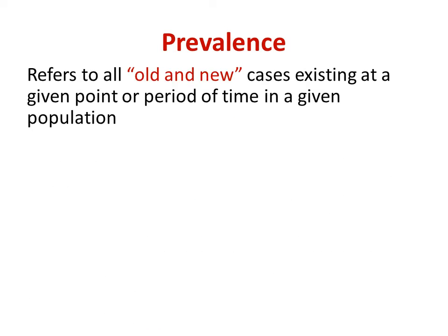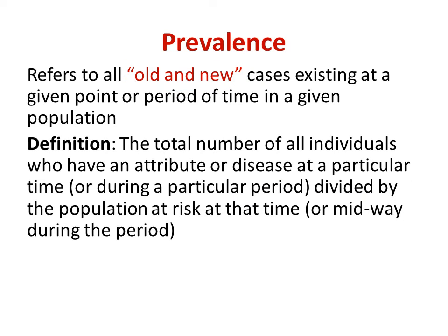Prevalence refers to all cases, whether old or new, existing at a given point of time or during a period of time in a given population. The definition is: the total number of all individuals who have an attribute or disease at a particular time or during a particular time period, divided by the population at risk at that time, or the mid-interval population.